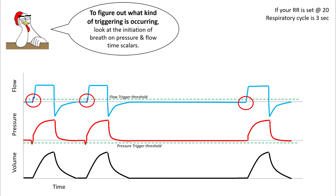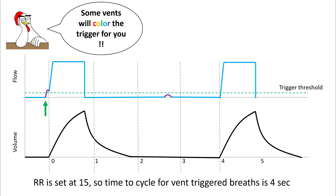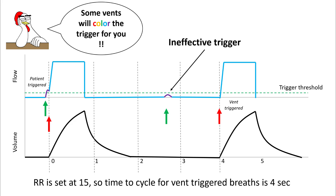To figure out what kind of triggering is occurring, look at the initiation of the breath on pressure and flow time scalars. Patient-triggered breaths will show a small notch in the flow time or pressure time scalar, while ventilator-triggered breaths will not have any. Some ventilators give you a color indicator for the trigger to make it easy to detect which breaths are being triggered. A patient-triggered breath shows a notch; an ineffective trigger shows the patient making effort but not crossing the threshold; and a ventilator-triggered breath shows no notch at the beginning.